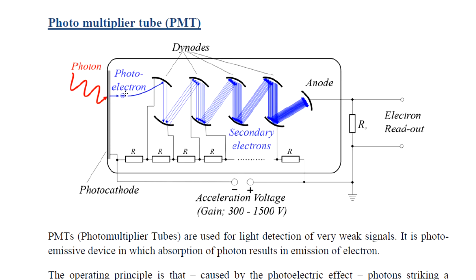This is a PMT. This is a tube. This is a photocathode — a photomultiplier.